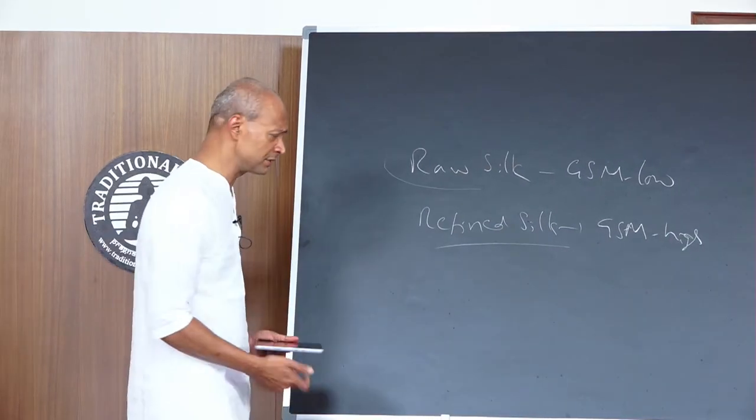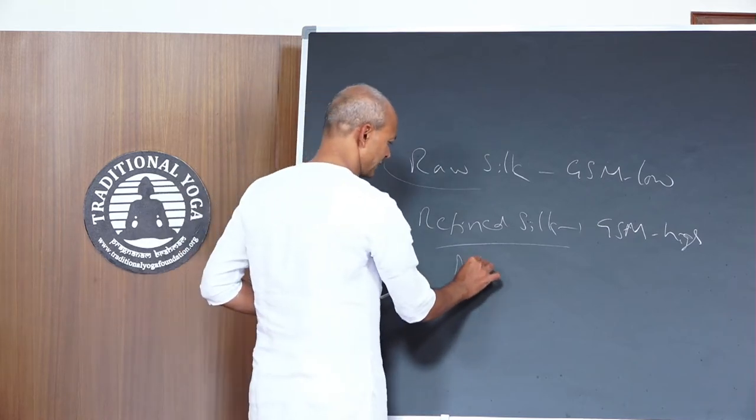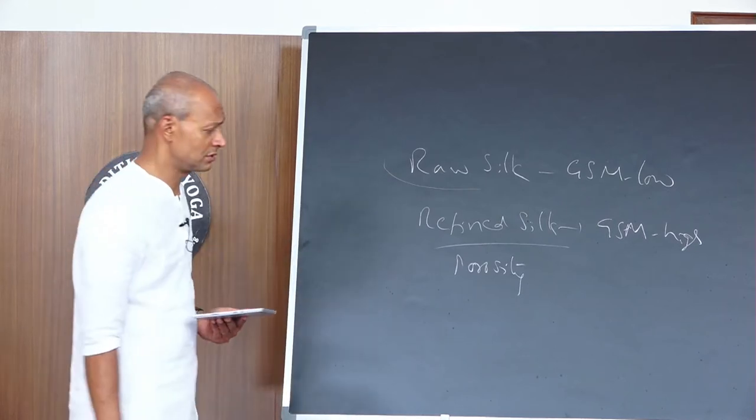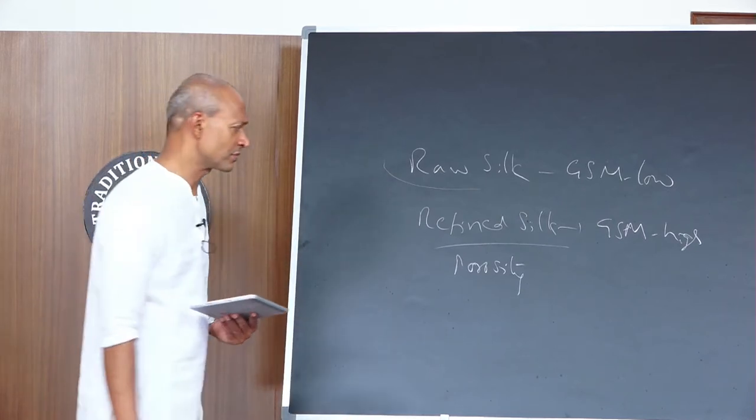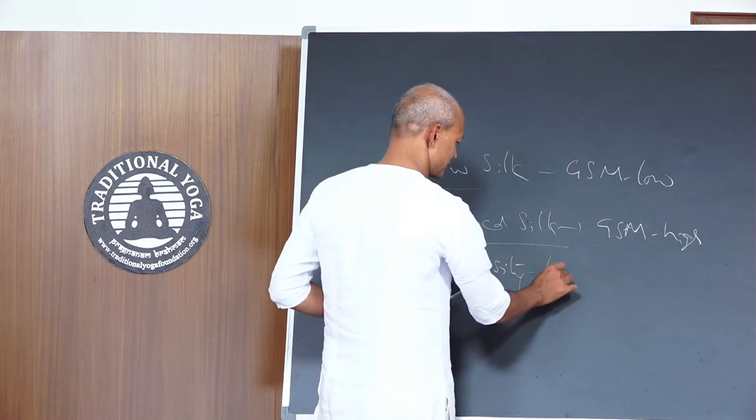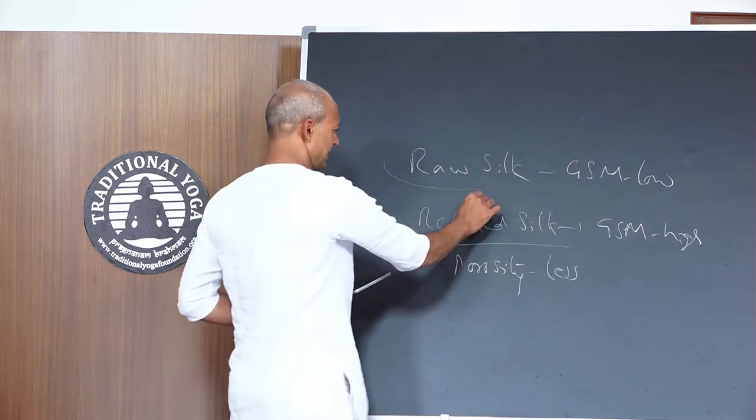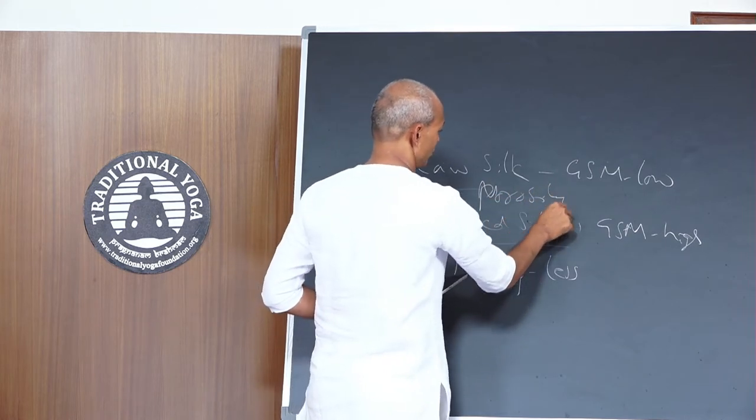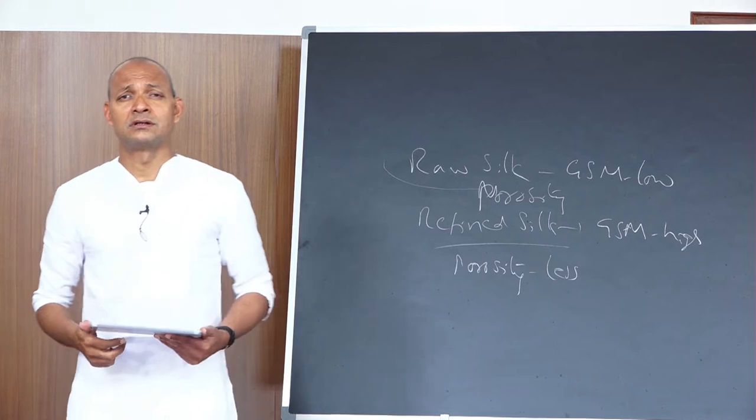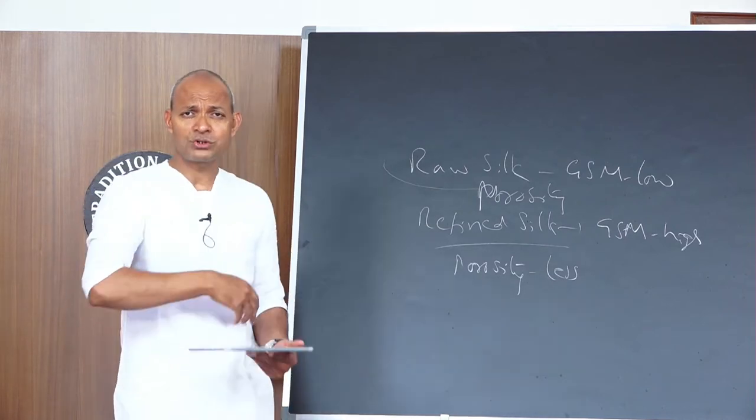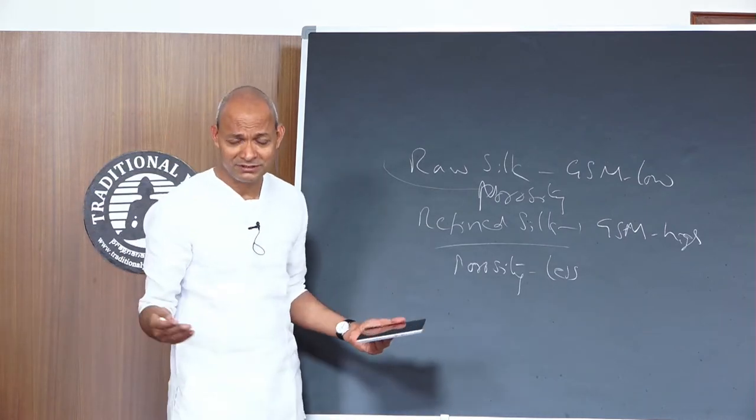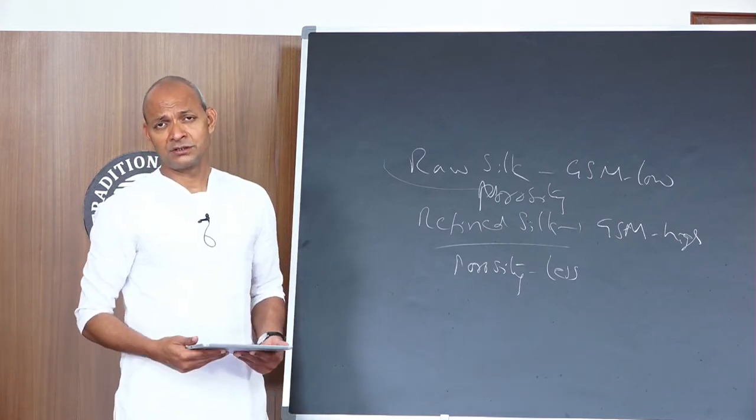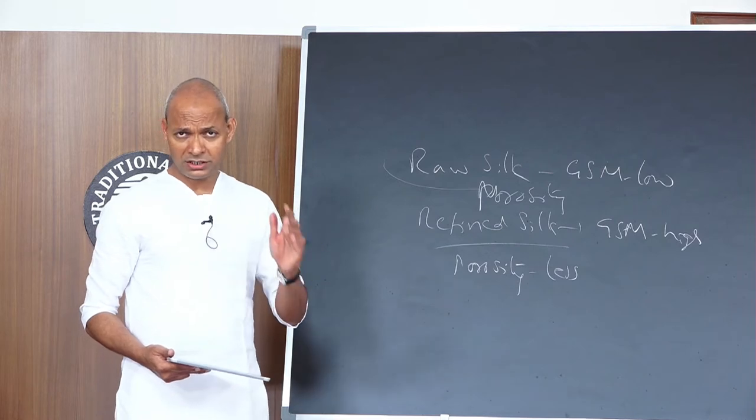High GSM means less porosity, or fewer holes per square inch. Low GSM means more porosity and more holes. For a mask, if the porosity is too high it is a problem, and if the porosity is too low it is also a problem because it will obstruct breathing.